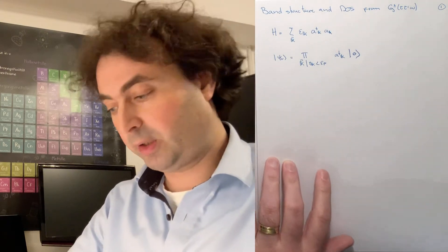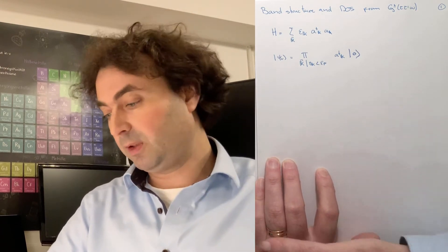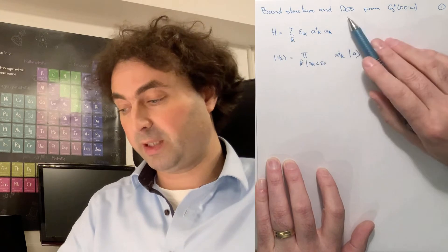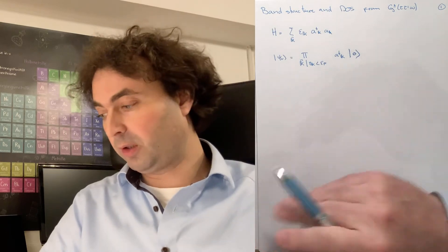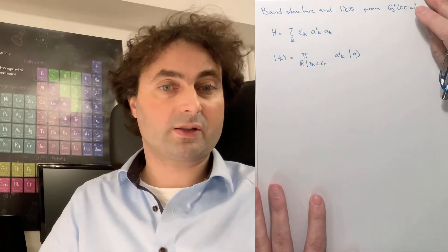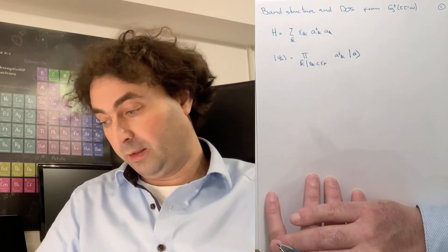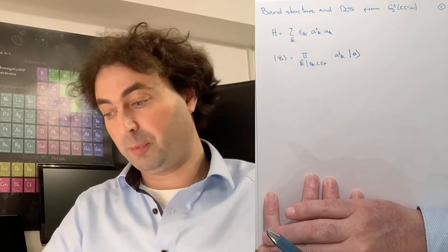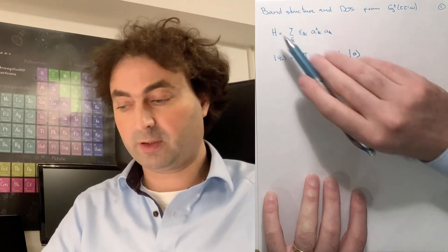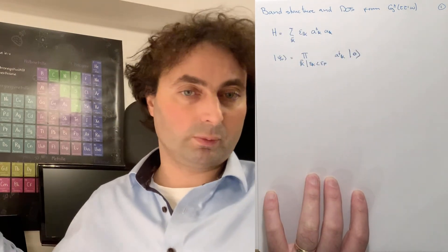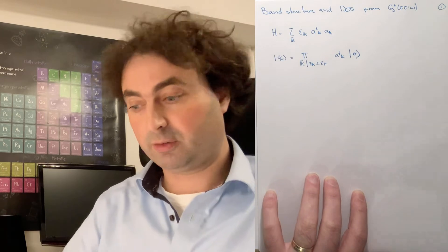We can now have a look at the Green's function, either in crystal momentum space or in real space, and we'll show that we can relate those to both the band structure and the densities of states. That is very practical because we've seen before that we can use the band structure and densities of states to calculate different material properties. What we will show is that we can basically replace those by the Green's functions. Once you know your Green's function, you have the band structure and densities of states, and therefore all material properties.